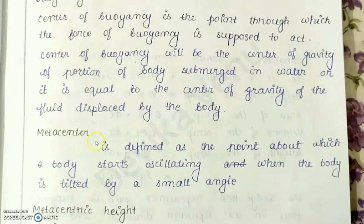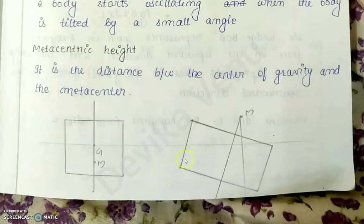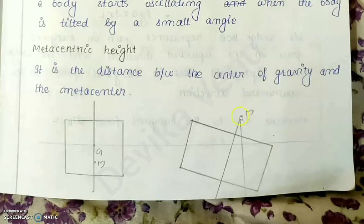The next term is metacenter. The metacenter is defined as the point about which a body starts oscillating. Suppose I give a tilt — the body starts oscillating. The point about which this body starts oscillating is known as the metacenter. It need not be inside the body; it can be outside also.